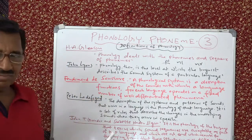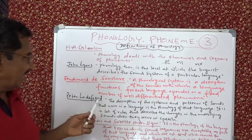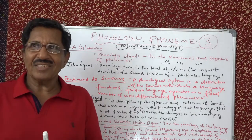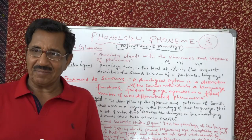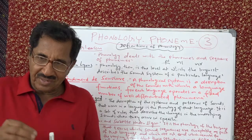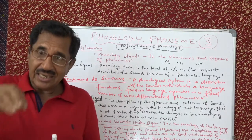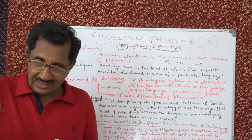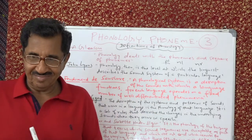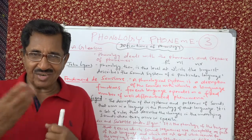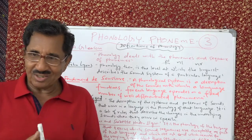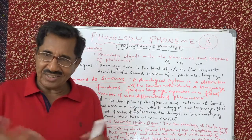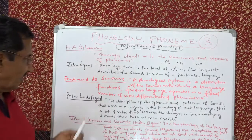Ferdinand de Saussure — very, very famous. He was a very talented and gifted teacher. He did not write any books, but his students attended his classes and compiled his notes into a book. What a good relationship he had with his students — it is a gift by God.